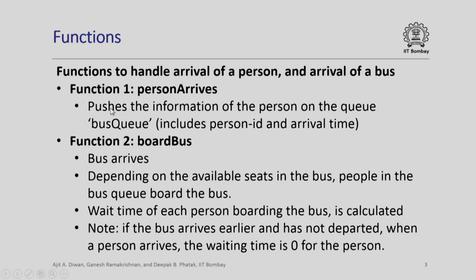Let us look at the additional functions we have to write, over and above the standard template library queue functions. The functions we will need handle: (a) the arrival of a person, and (b) the arrival of a bus. Person arrives is a simple function — we just push the person's information onto the bus queue, including person ID and arrival time. Boarding the bus is more complex: we handle the bus arrival, people board depending on available seats, and we calculate wait time for each person. If the bus arrives earlier and has not departed when a person arrives, the wait time is zero.